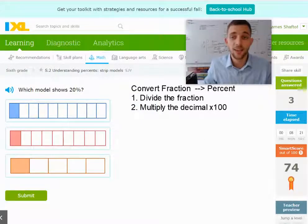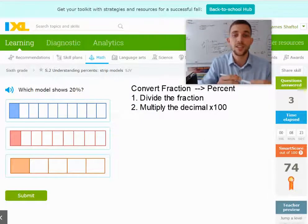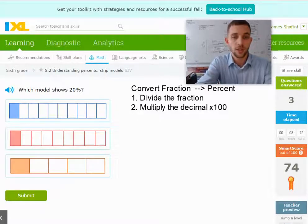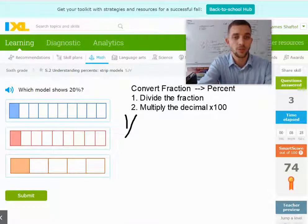This next one, it asks which of these shows 20 percent. So here in the first fraction, we have 1, and there's 2, 4, 6, 8, 10. So that's 1 tenth.